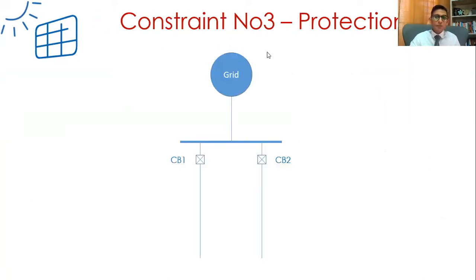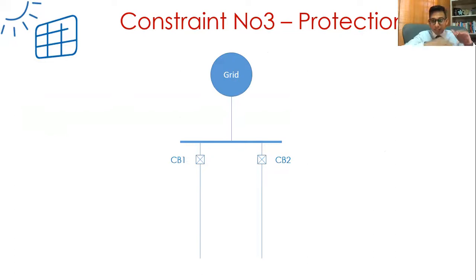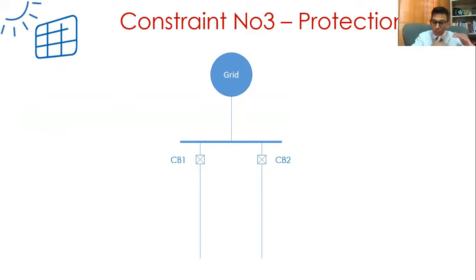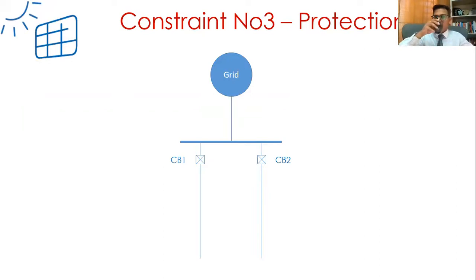We have now seen two criteria: voltage - if left uncontrolled, it can cross regulatory limits - and losses, which decrease to a minimum point then increase again with reverse power flow if DG output exceeds the local load. Now the third one: let's look at protection. We have a grid, two lines, a bus bar, and two circuit breakers - CB1 and CB2. Let's say there's a fault downstream of CB2. There will be fault current flowing from the grid through CB2 to feed the fault. CB2 will trip due to overcurrent protection, isolating that section.